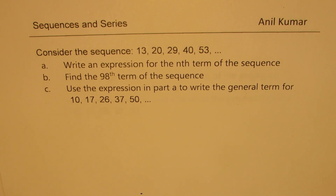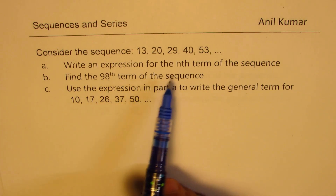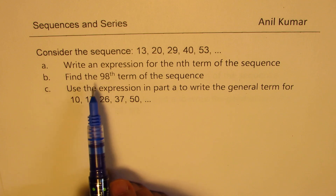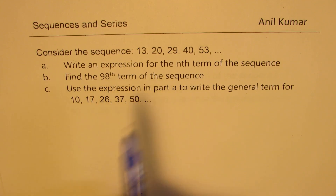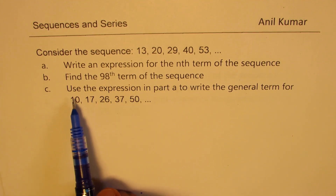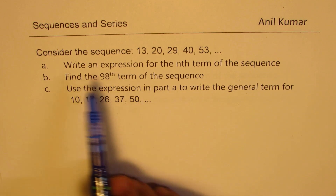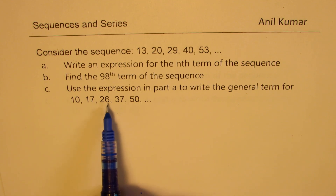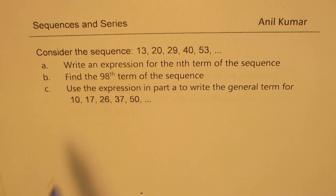The question here is: consider the sequence 13, 20, 29, 40, 53 and so on. Part A is to write an expression for the nth term of the sequence. Part B is to find the 98th term of the sequence. And Part C is to use the expression in Part A to write the general term for 10, 17, 26, 37, 50. You can always pause the video, answer the question, and then look into my suggestions.